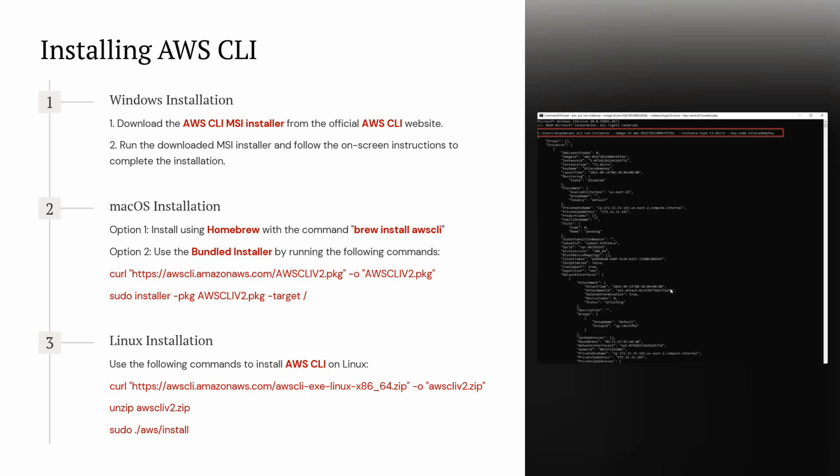Now we will see how to install the AWS Command Line Interface on different operating systems. The first one is Windows installation. We have to download the AWS CLI MSI Installer from the official AWS CLI website, then run the downloaded MSI Installer and follow the on-screen instructions to complete the installation.